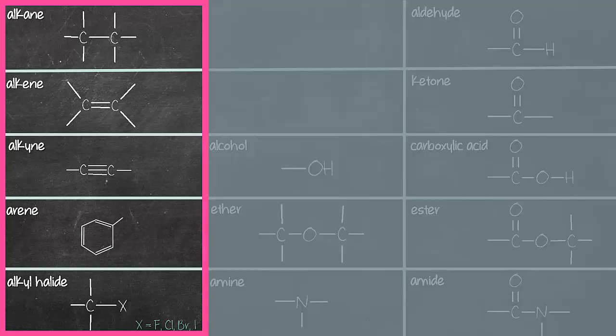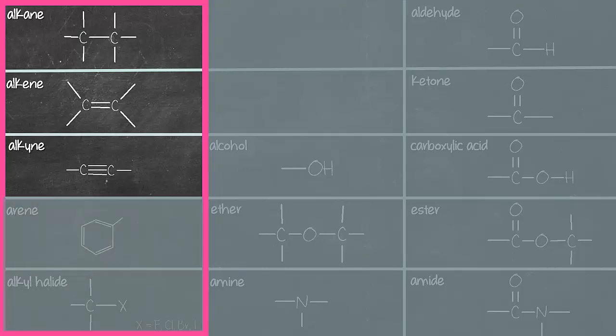Let's look at the first grouping. They are all hydrocarbons except for the fifth one, alkyl halide, which is a hydrocarbon derivative. Hydrocarbons are compounds that consist of only carbons and hydrogens. So let's focus on the first three: alkane, alkene, and alkyne.